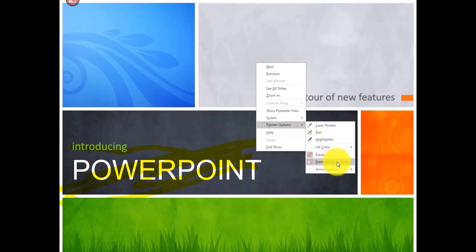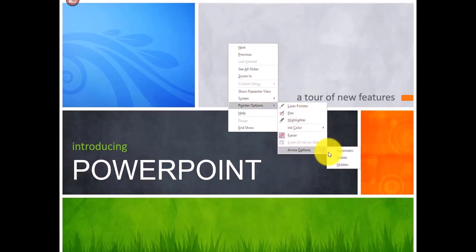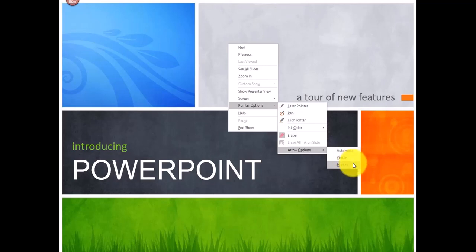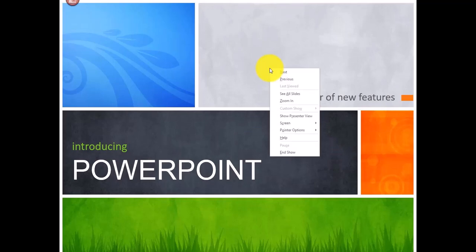There's also an Eraser — when you click on a drawn shape it erases it. You can also select Erase All Ink on Slide. Regarding Arrow Options: if set to Automatic the mouse pointer may disappear, so select Visible if you always want to see it, or Hidden if you want to hide it entirely.